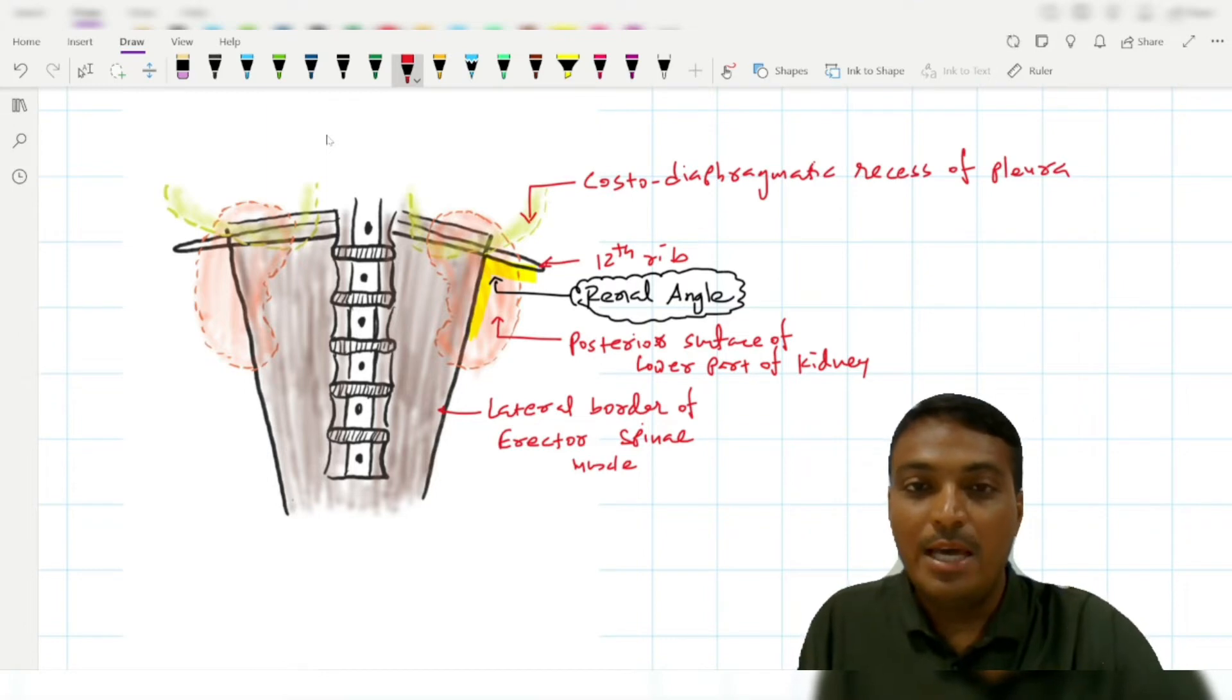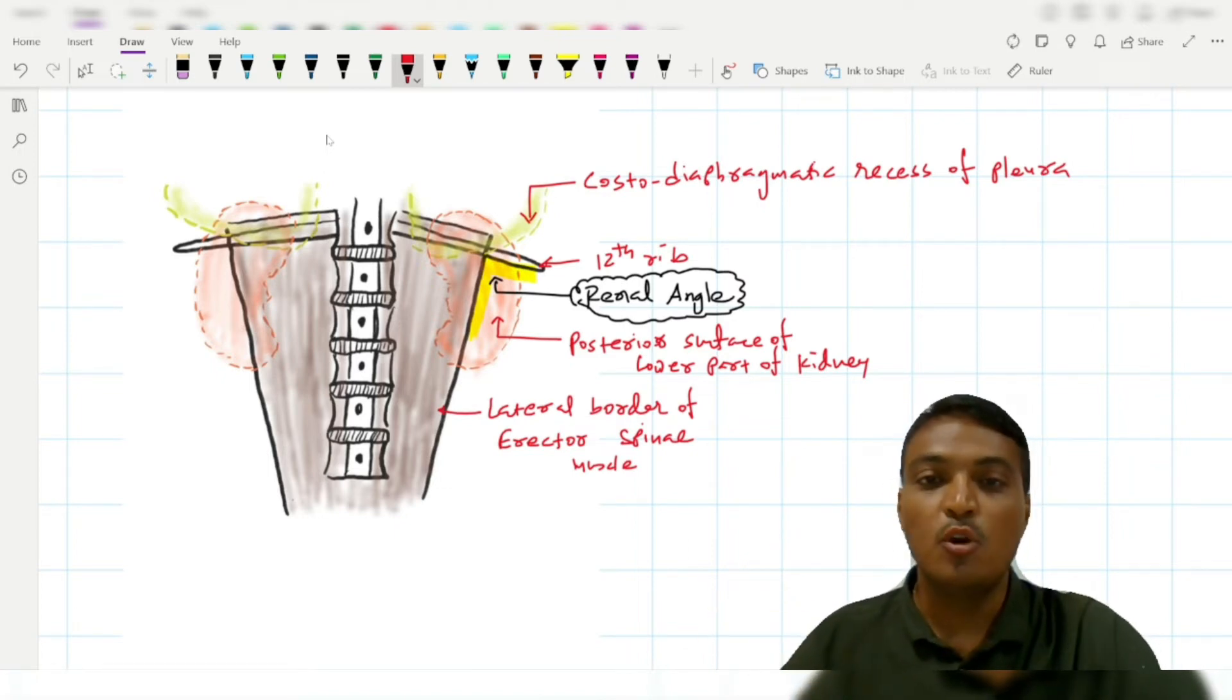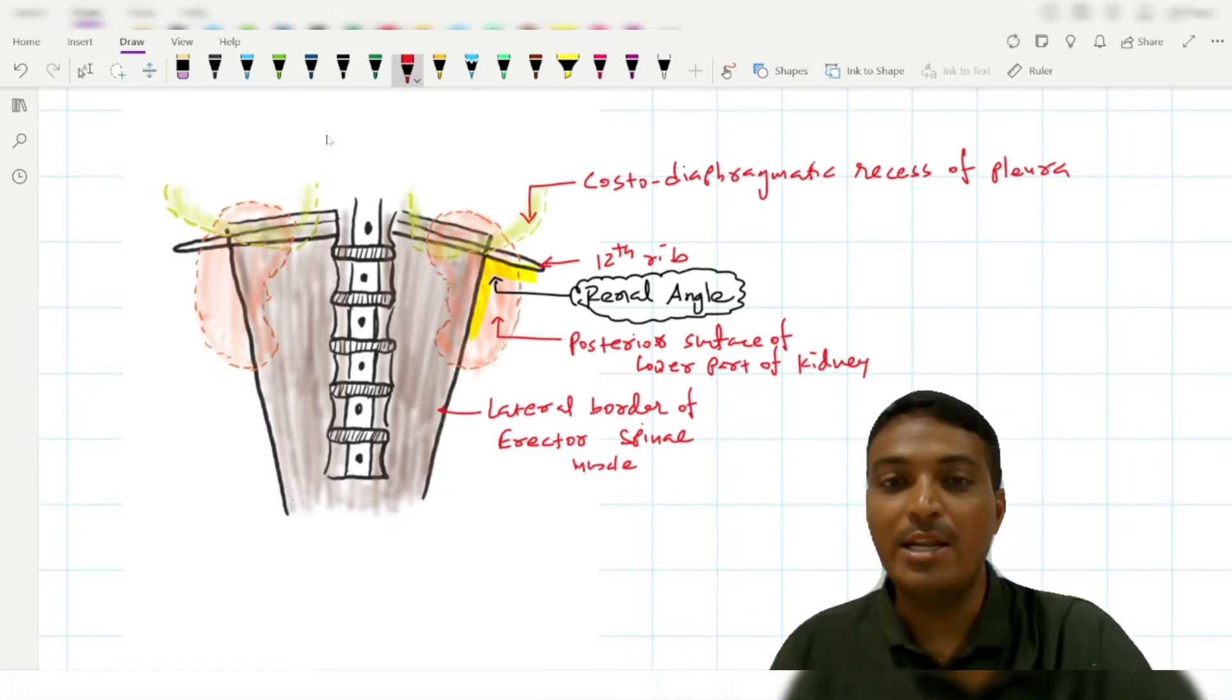This renal angle is the area for surgical exposure of the kidney retroperitoneally. The surgeon puts an incision over this renal angle to expose the kidney retroperitoneally.